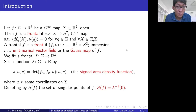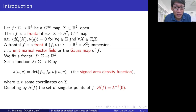First, I would like to explain some notions. Let f be a C-infinity map from σ to R³, where σ is an open set in R². Then we call f a frontal if there exists a C-infinity map ν from σ to R², such that this orthogonality condition holds for any point q in σ and any tangent vector x.